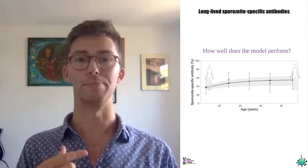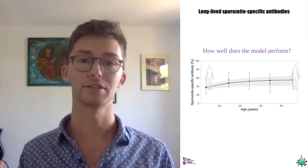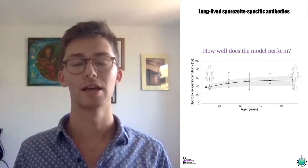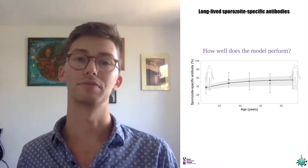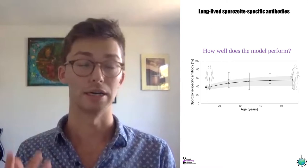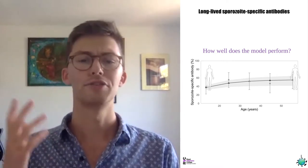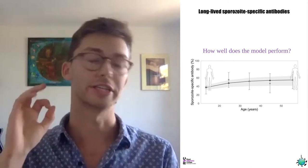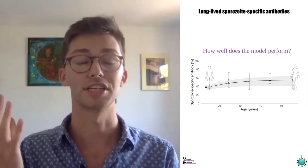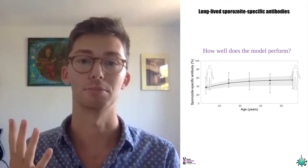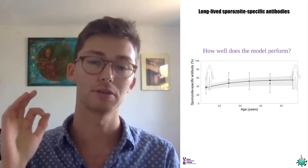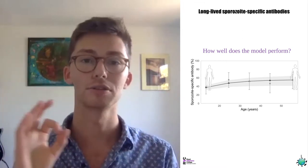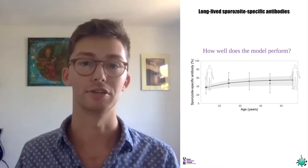Let me show you a bit about how the model performs. On the figure over here, the bottom axis shows age in years — from teens until the late 50s — and the vertical axis shows the prevalence of these sporozoite-specific antibodies, the marker of oocyst infection. For example, at about 25 years old, the gray points and error bars show the data — in this case about 60% of people have had an oocyst infection at some point. Gray points show the data collected in Brazil.